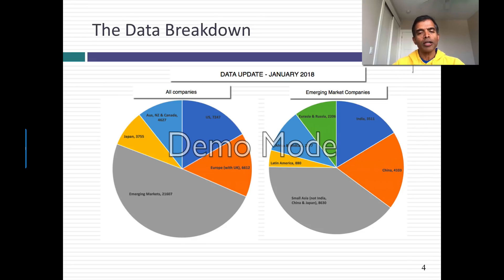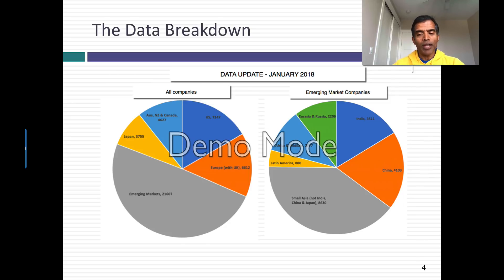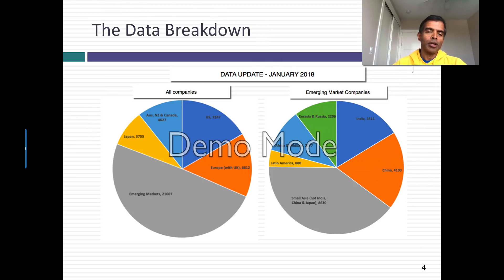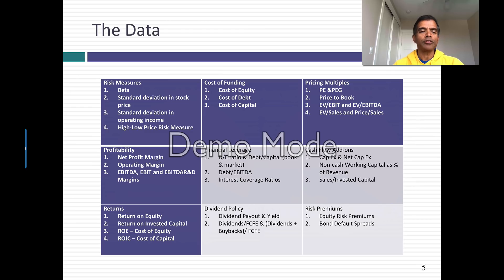If you look at the emerging market data, it is a big data set, so I have a subgrouping. I have India and China as separate markets simply because there are enough companies within each market that I can treat them separately. I have Latin America as one grouping, small Asia — that's all Asian companies that are not in India, China, or Japan — Eastern Europe and Russia as a grouping, and Africa and the Middle East. So basically I have a broad grouping and a subgrouping.